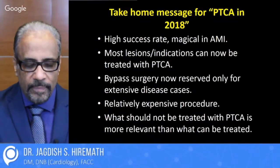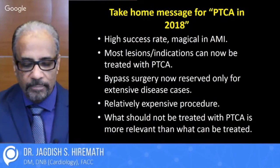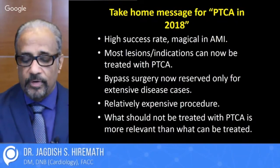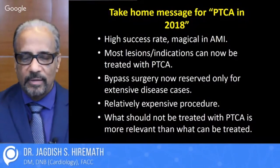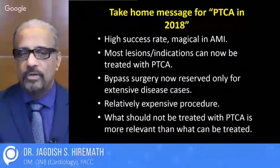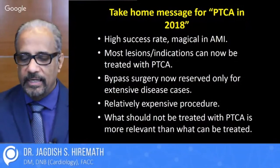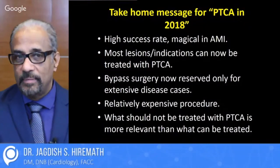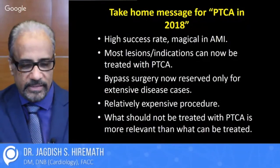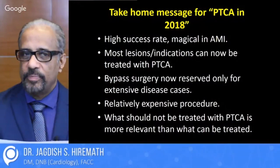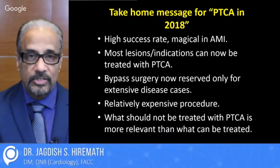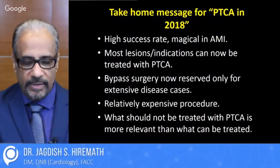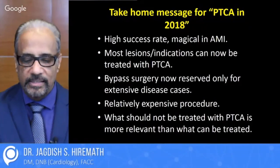Dr. Mridul Srivastava asks: how long is it mandatory to continue antiplatelet medication after angioplasty or stenting — one drug or two drugs, what are the current recommendations? Two drugs for acute coronary syndrome — aspirin remains the number one drug. The second antiplatelet would be ticagrelor or prasugrel for acute coronary syndromes. Whenever prasugrel is contraindicated, ticagrelor can be used. For chronic stable lesions, aspirin and clopidogrel still remain the dual antiplatelet of choice. Most patients should be continued for one year definitely. Those who have multiple stents and chances of thrombosis should be continued for 30 months. Those who have high bleeding chances should be stopped at one year. That is the current recommendation.